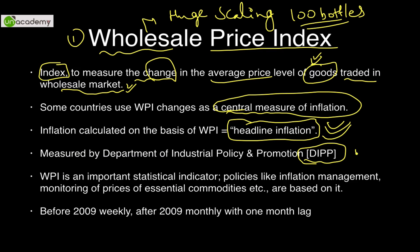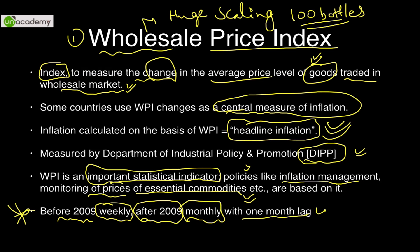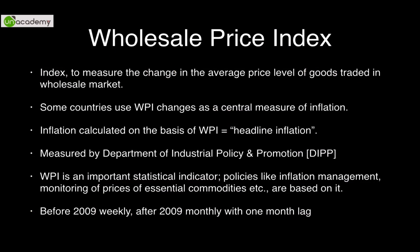Inflation calculated on WPI is called headline inflation — please remember this, as it can be asked in examinations. WPI is measured by DIPP, the Department of Industrial Policy and Promotion. It is a very important statistical indicator because government policies like inflation management and monitoring of prices of essential commodities depend on it. Before 2009 it was calculated weekly, but after 2009 it is calculated monthly with a one-month lag.